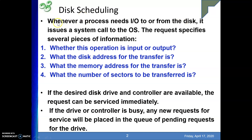Whenever we are placing a request for any disk operation, whenever a process needs any I/O to or from the disk — that means read or write operation from the disk — it issues a system call to the operating system. The request specifies several pieces of information. Whenever we do communication, we need to tell from where we are doing the communication, the direction of communication, and the amount of data we are transferring.